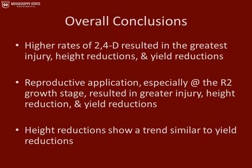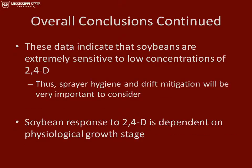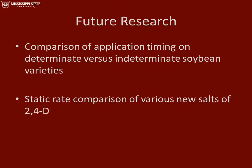Overall, the higher rates of 2,4-D resulted in the greatest injury, height reductions, and yield reductions. The reproductive application, especially at the R2 growth stage, resulted in the greatest injury, height reductions, and yield reductions. Throughout this experiment, height reductions showed a similar trend to yield reductions. These data indicate that soybeans are extremely sensitive to low concentrations of 2,4-D; thus, sprayer hygiene and drift mitigation will be very important to consider in the future. Soybean response to 2,4-D is dependent on the actual growth stage at the time of application. In the future, it will be important to look at a comparison of application timing on determinate versus indeterminate soybean varieties, as well as a static rate comparison of various new salts of 2,4-D.